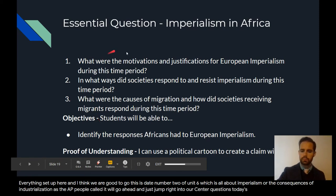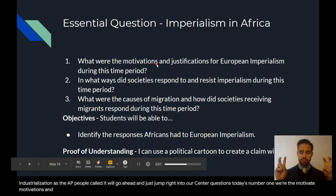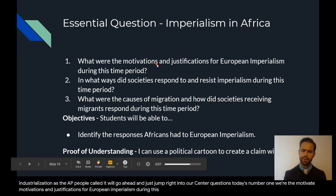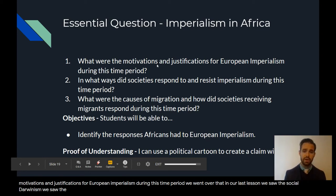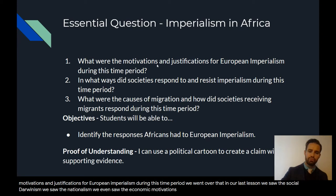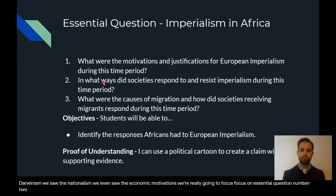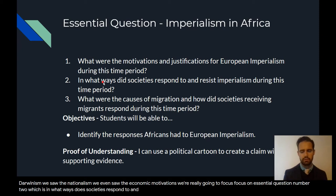Essential question number one: what were the motivations and justifications for European imperialism during this time period? We went over that in our last lesson — we saw social Darwinism, nationalism, and the economic motivations. We're really going to focus on essential question number two, which is: in what ways do societies respond to and resist imperialism during this time period?